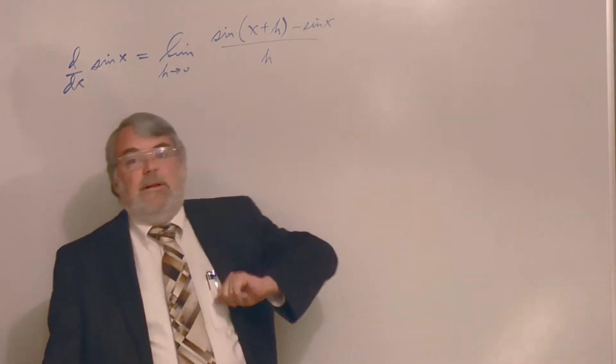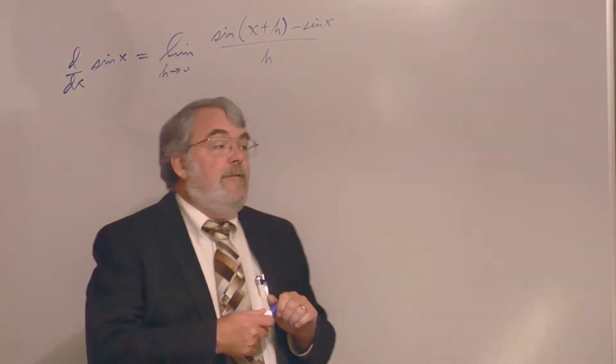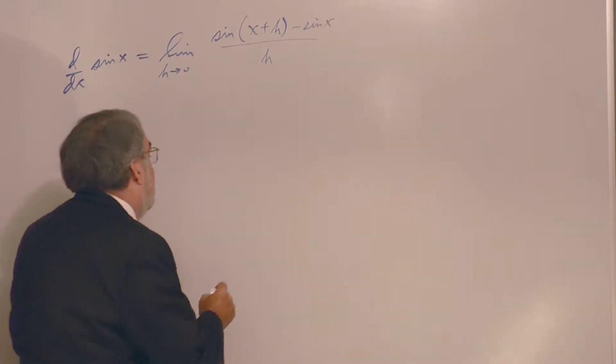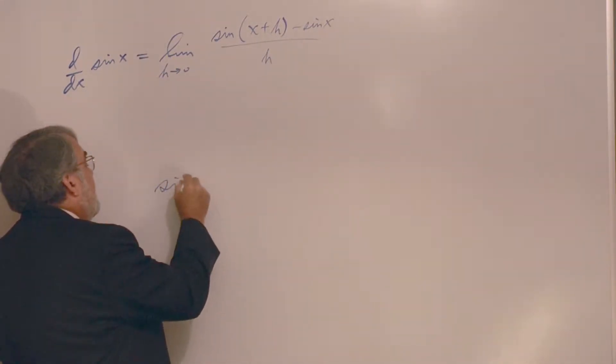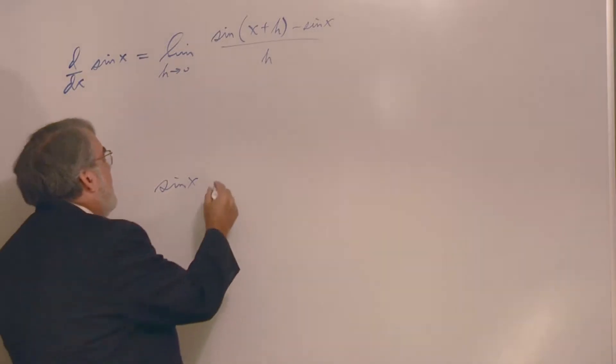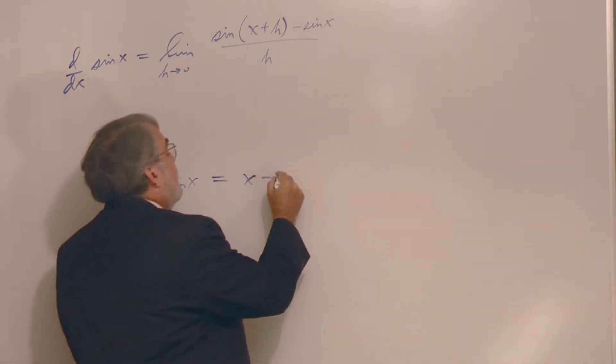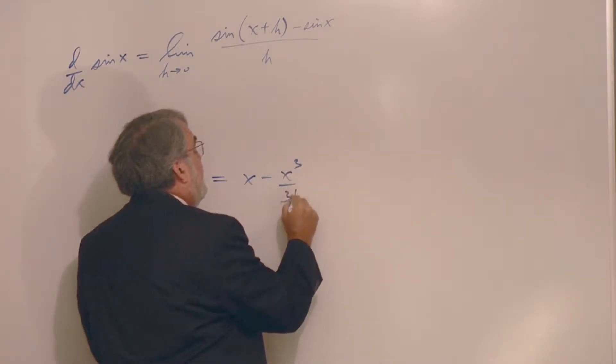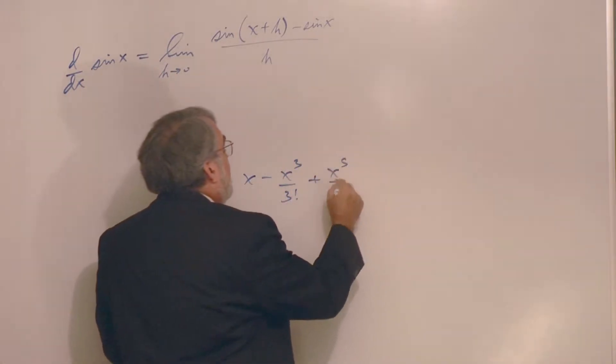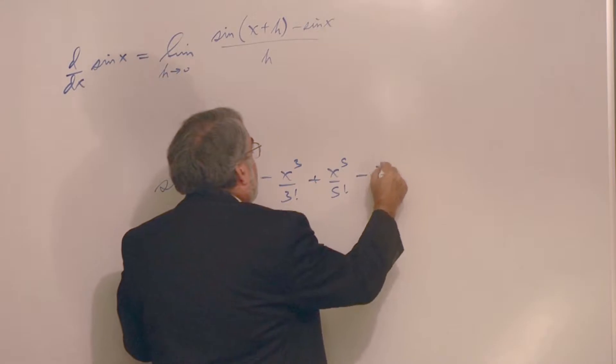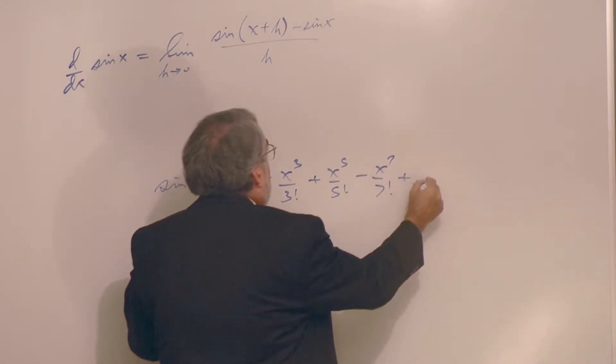The sine function, the best we can do with it, is x minus x cubed over 3 factorial plus x to the 5th over 5 factorial minus x to the 7th over 7 factorial, on and on and on.